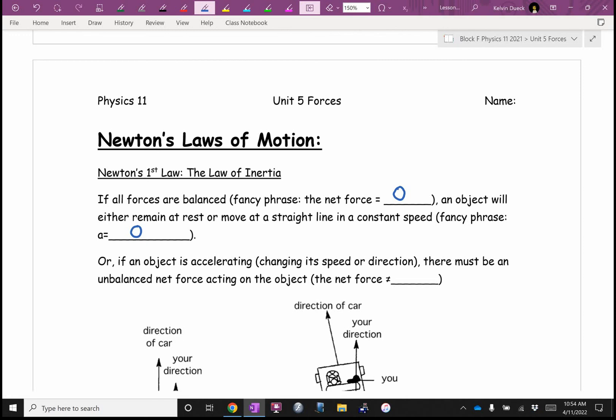And the only way an object can't be accelerating, the only way it can have an A of zero, two ways. If it's stopped, it's still stopped. Or if it was moving, it's moving in a straight line at a steady speed. So when you saw me roll that ball on the floor, and it came to a stop, the net force could not have been zero, because it slowed down and came to a stop. There had to have been an unbalanced force acting on it.